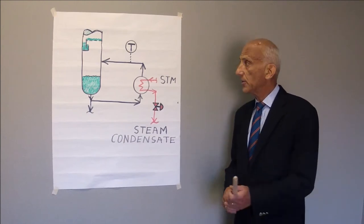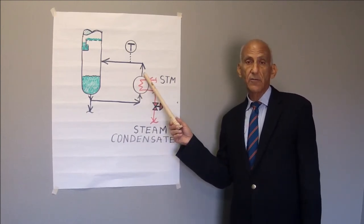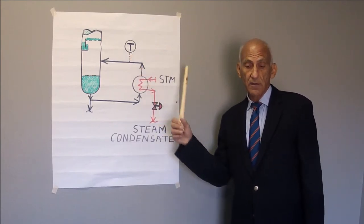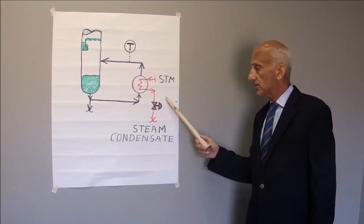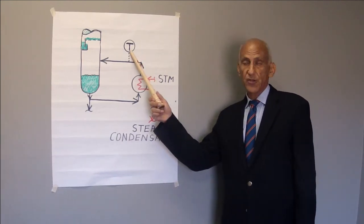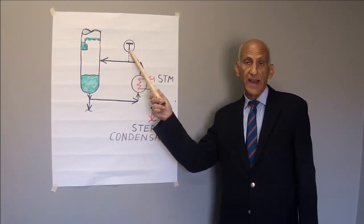And the way I do it is I simply look at the reboiler shell side outlet temperature at T1, and I adjust this control valve to try to maximize the temperature on the process side on the outlet of the reboiler.